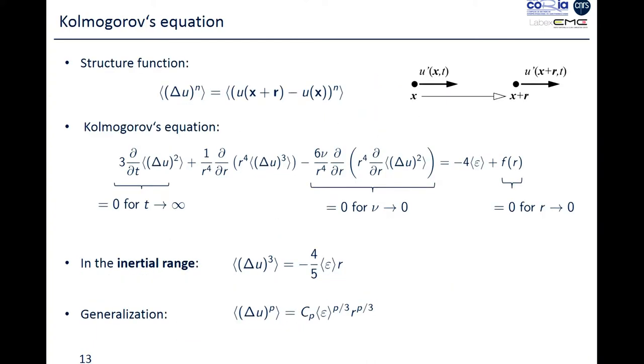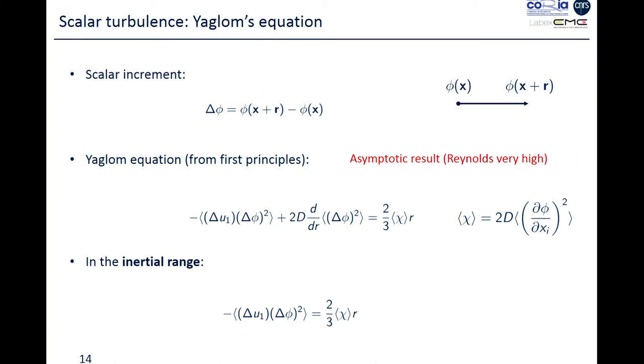To describe that, we usually work with structure functions that can be for the velocity field, any order structure functions for the velocity field, so increments between two points of the space separated of a scale R. We have transport equations for these increments and moments, and we'll be particularly interested in increments for the scalar, for which we have, under conditions of asymptotic results, transport equations which relate a second-order moment to the mixed third-order moment, and the mean value of chi, which is the dissipation of the scalar variance.